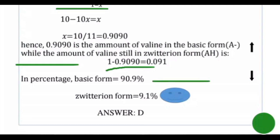Converting to percent by multiplying by 100: the basic form constitutes 90.9% and the zwitterion form constitutes 9.1%. The question asked for the zwitterion form, so our final answer is 9.1%. Thank you for watching.